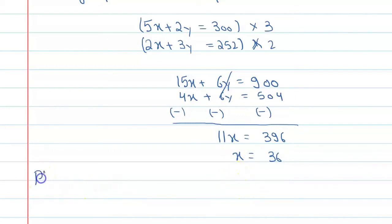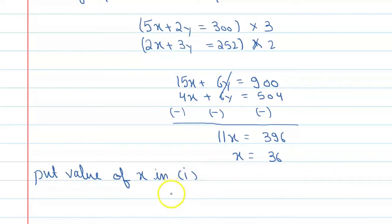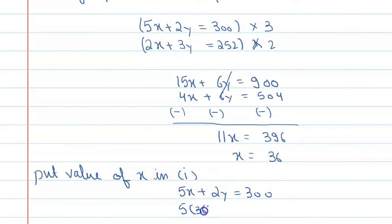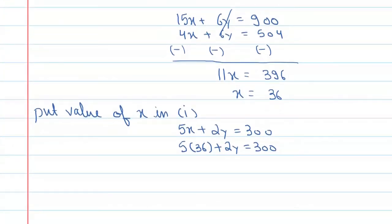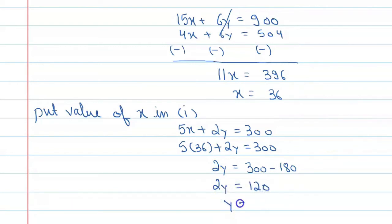Now put the value of x into equation number 1. Equation number 1 is 5x + 2y = 300. Substituting x = 36: 5 × 36 + 2y = 300, which gives 180 + 2y = 300. So 2y = 300 − 180 = 120, therefore y is equal to 60.